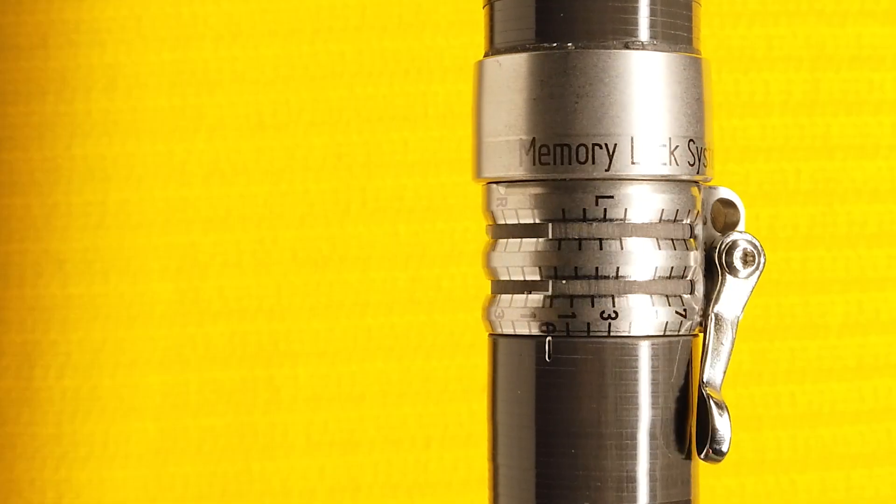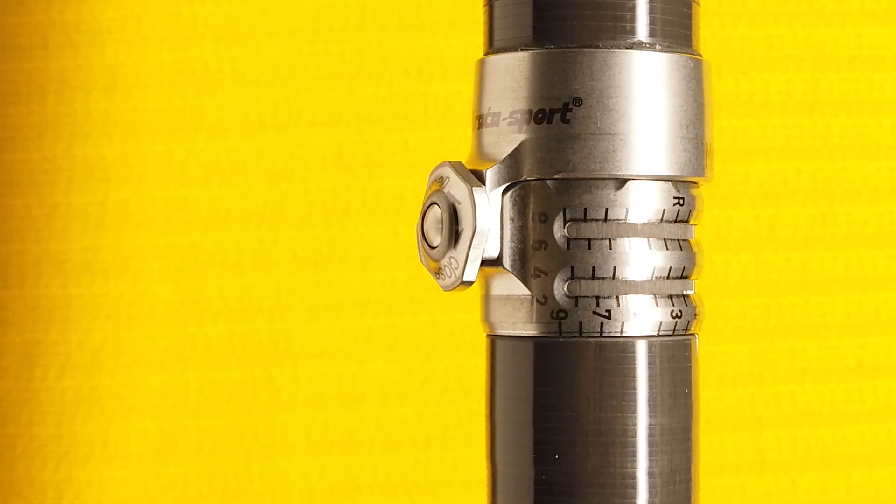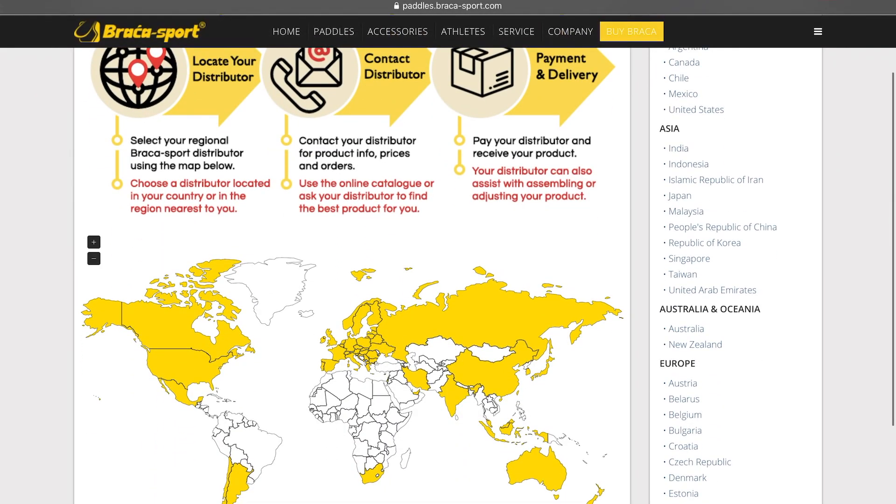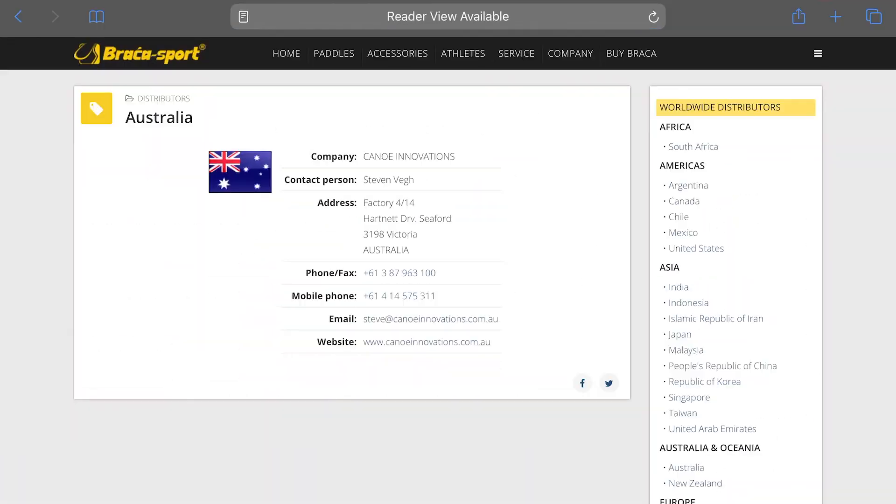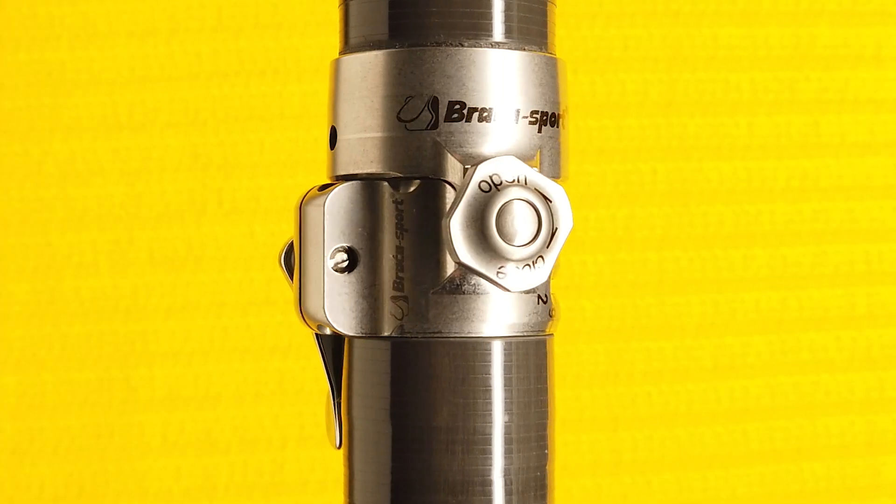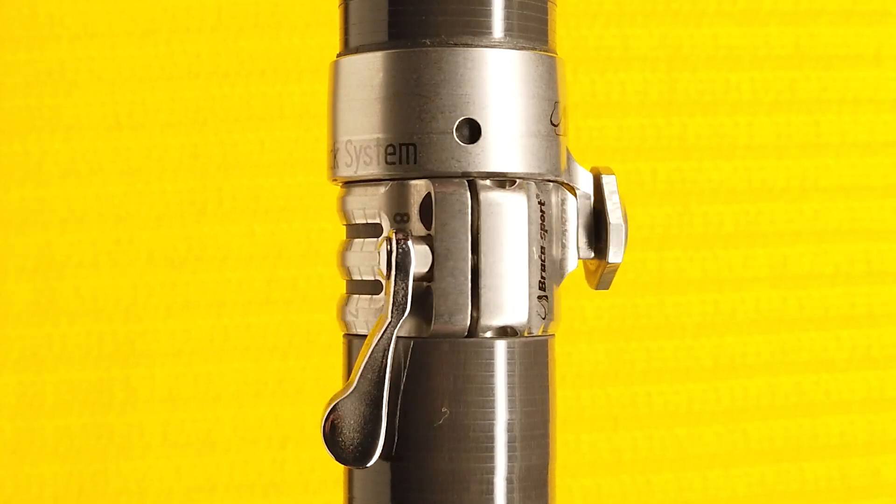Now that you know how the memory lock system works, order yours today. On our homepage, you can locate the Bracha Sport distributor nearest to you. Buy from your local distributor and enjoy a new adjustable kayak paddle experience with the memory lock system.